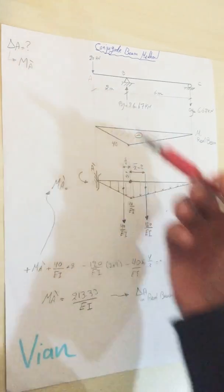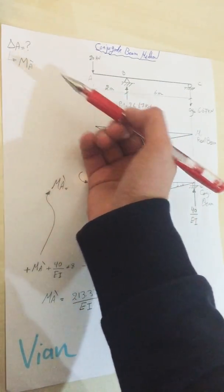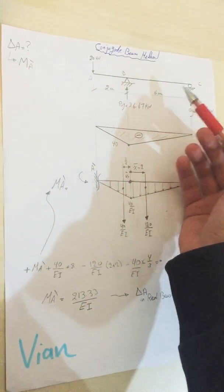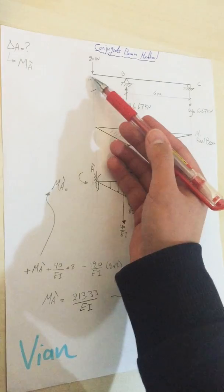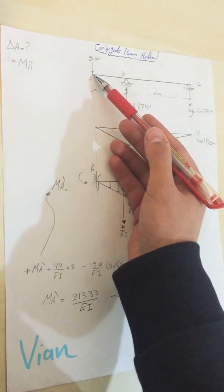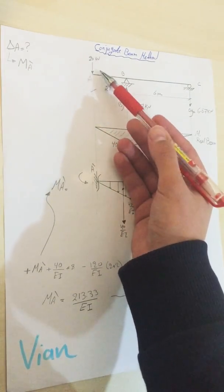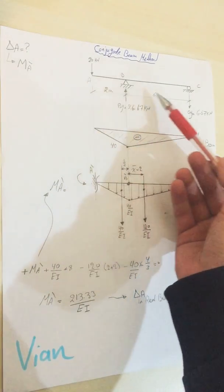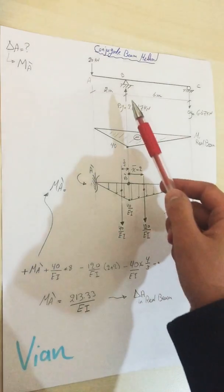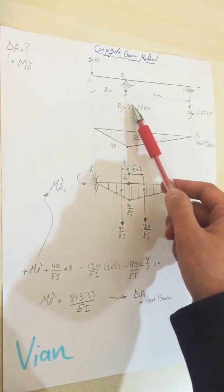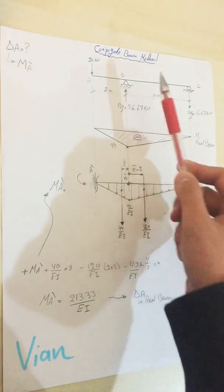I have this example and it needs the deflection at A, which will make the moment at A dash. A dash is for the conjugate beam. The beam I have has a roller support and a pin or hinged support, and one concentrated load at the end at point A which is 20 kilonewtons, with distances 2 meters and 6 meters.